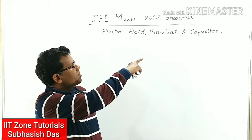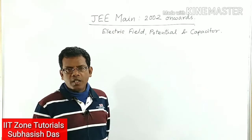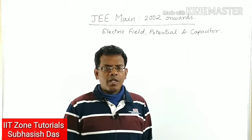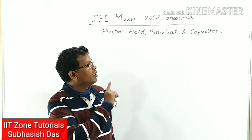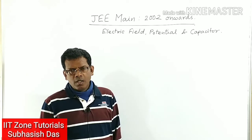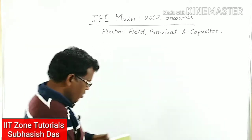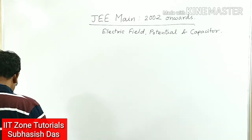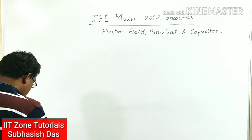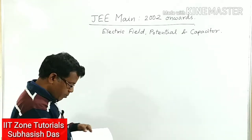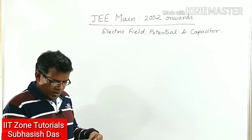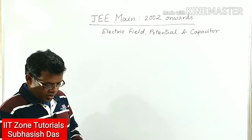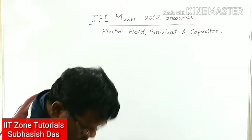Today I am starting with the first topic — electric field, potential, and capacitor. I will discuss the questions that have been asked on this topic from 2002 onwards. The first question is from 2002: a charged particle of 20 coulombs is moving through a distance of two centimeters, and to do so, 2 joules of work has been done. What is the potential difference?